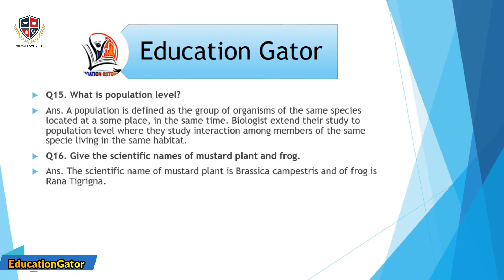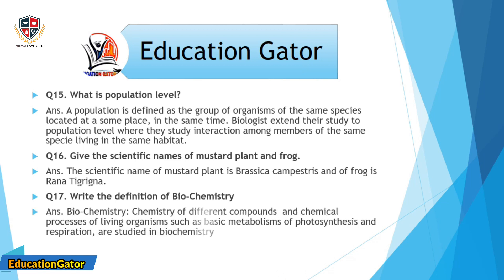Question number 16: Give the scientific names of mustard plant and frog. Ans. The scientific name of mustard plant is Brassica campestris and of frog is Rana tigrina.